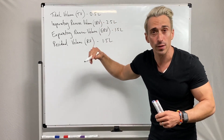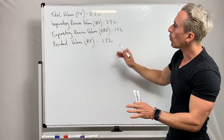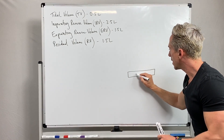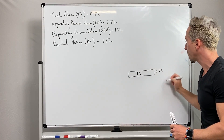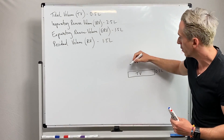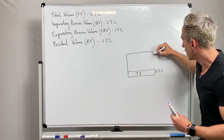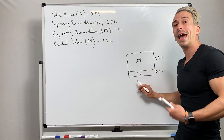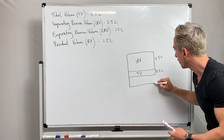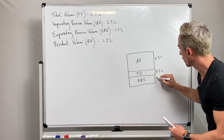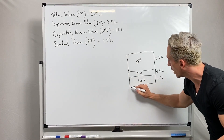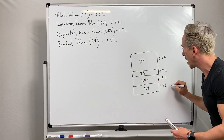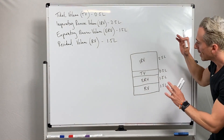You can add certain combinations of these volumes and that gives you lung capacities. A great way to demonstrate this visually is by drawing it up. Here is our tidal volume, around about half a litre. On top of tidal volume we can forcefully inhale around about 2.5 litres — that's our inspiratory reserve volume. Below tidal volume we have our expiratory reserve volume of around about 1.5 litres, and then our residual volume, also around about 1.5 litres. So here are our four volumes.